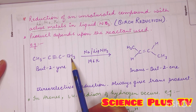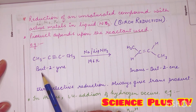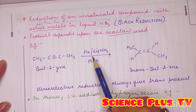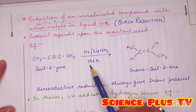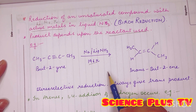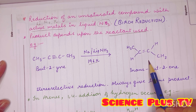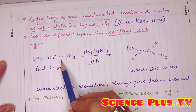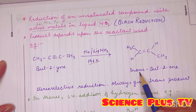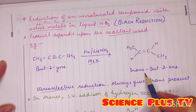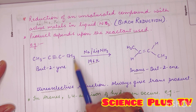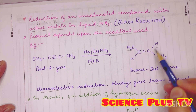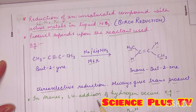For example, if we take this aliphatic hydrocarbon, but-2-yne — we have a triple bond between the carbon atoms. When treated with sodium in the presence of liquid ammonia at a temperature of 196 Kelvin, it gives addition of hydrogen at those two carbon atoms, and we get a stereoselective reduction product — a trans product. This kind of reduction always gives a trans product. You can see the methyl and the hydrogens are at the trans positions.